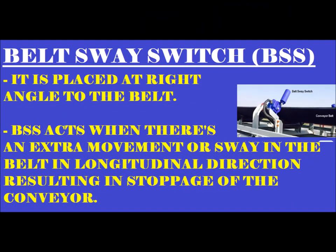The second component is the belt sway switch (BSS). The BSS is mounted at a right angle to the conveyor belt. It works when the belt moves in the longitudinal direction — if the belt moves to the right or left side instead of its straight path, this is called belt sway. Movement to either side can damage the belt due to wear and tear, so the BSS is used to detect and stop the belt to prevent damage.